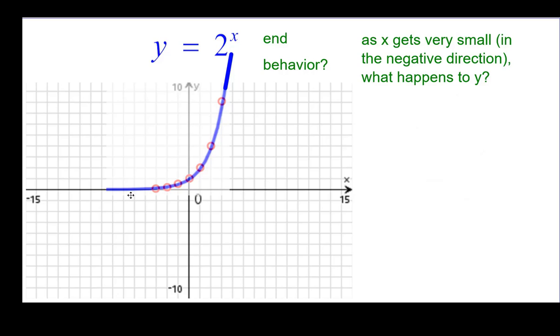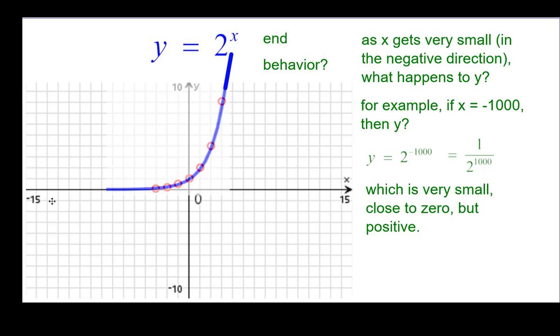And as x gets very small but in the negative direction, out here somewhere. For example, if x is negative 1,000, then what's happening to y? Well, 2 to the negative 1,000, by definition would be 1 over 2 to the positive 1,000th power. 1 over a huge positive number is a number really close to 0, but it will be positive. Now we show that on the graph is out here. It kind of flattens out.